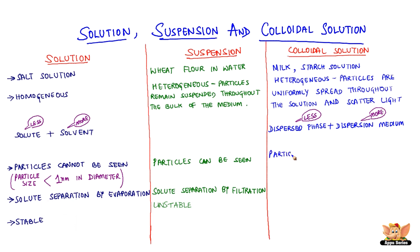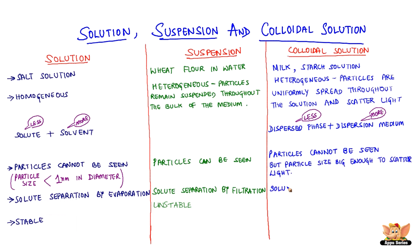Though the solute particles in colloidal solutions cannot be seen, the particle size is large enough to scatter light. These particles can be separated by the centrifugation process. When a colloidal solution is left undisturbed and the solute particles do not settle down, the colloidal solution is said to be stable.